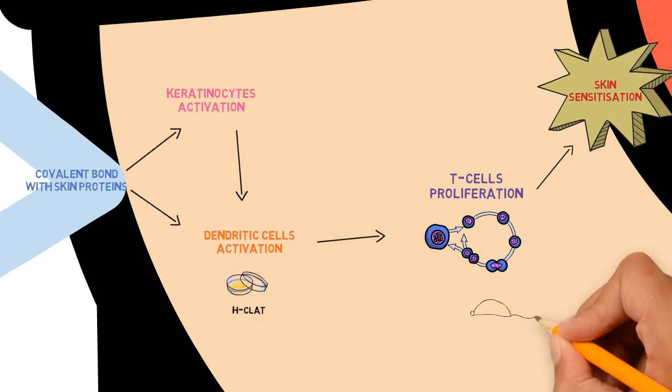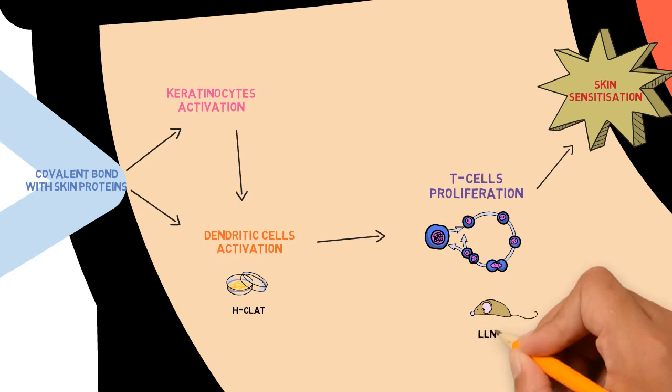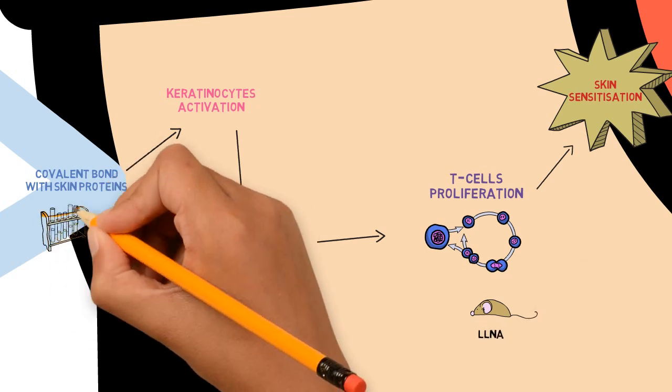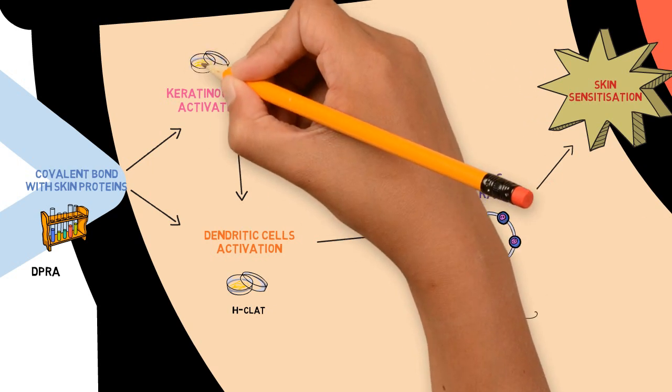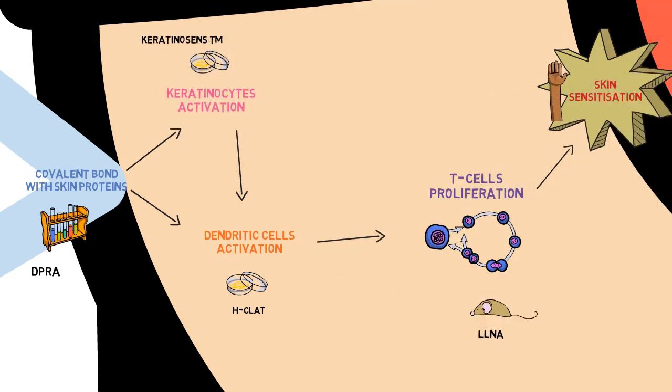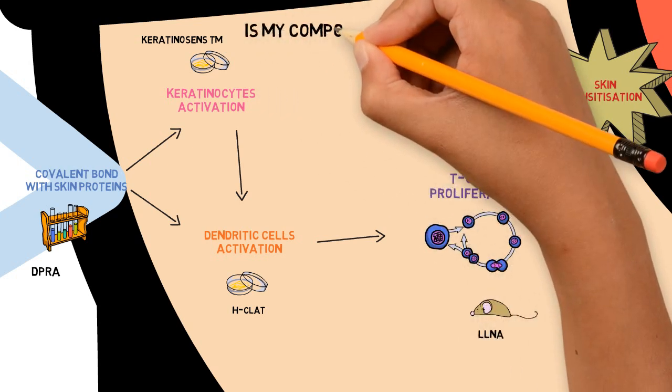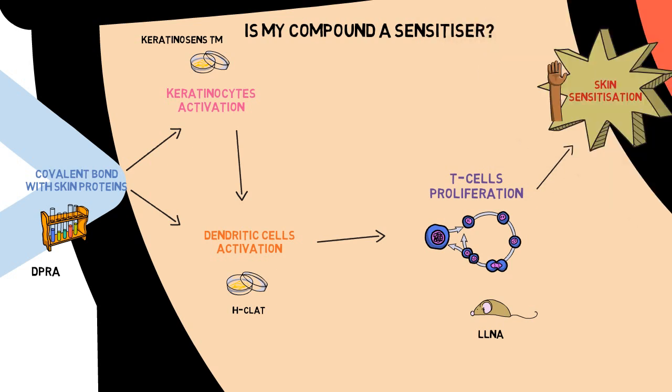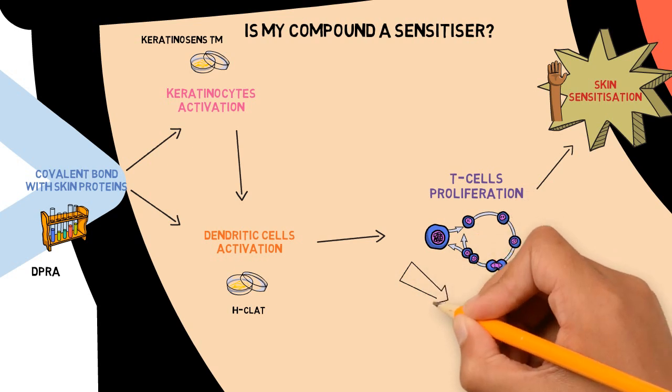Such as the h-CLAT for dendritic cell activation or the LNA to measure T-cell proliferation. Usually the more complex the event, the more complex the assay used to measure it. So which of these assays should we choose if we want to answer the question: is my compound a sensitizer?